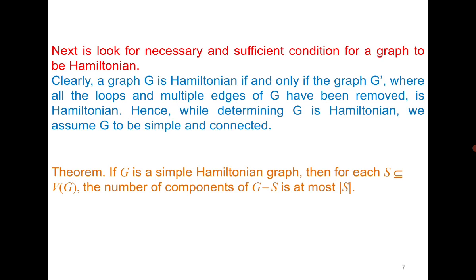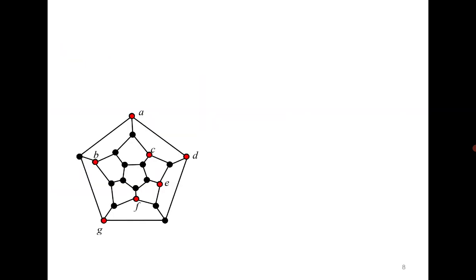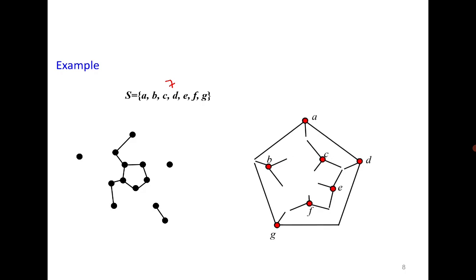Let us understand the statement of the theorem by an example. If we consider this graph, we have already seen that it is Hamiltonian. Let us assume the set S to be {A, B, C, D, E, F, G} with 7 vertices. If I delete these 7 vertices, the claim is the number of components will always be less than or equal to 7. After deletion, we got 4 components: 1, 2, 3, and 4.